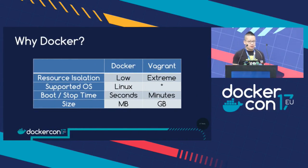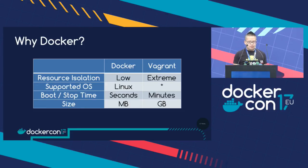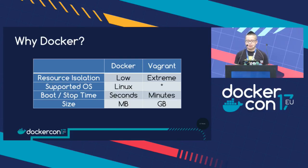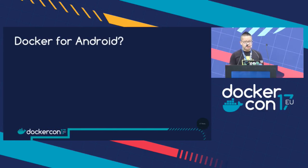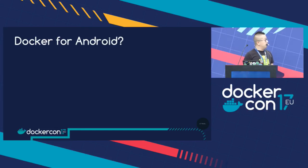Why choose Docker? For mobile CI or Android CI, we don't really care about resource isolation — it's not for production, it's only for development purpose inside the team or corporation. For Android, Docker's supported OS Linux is more than enough. For CI, when a mobile developer pushes code and triggers a CI build, you want immediate feedback, so boot time matters. The lightweight image size is also great to have.